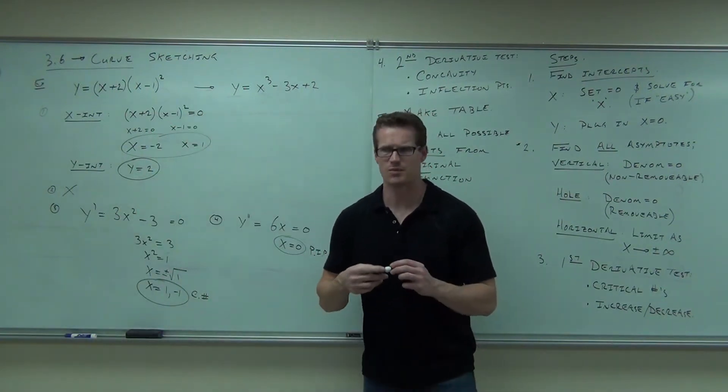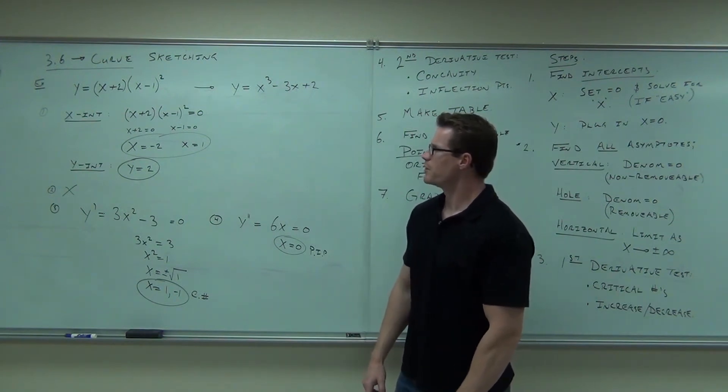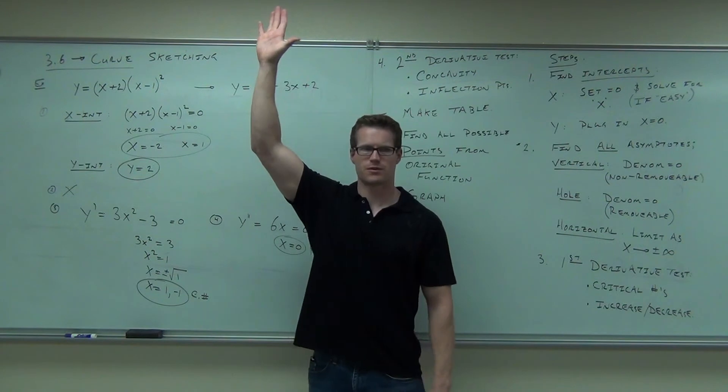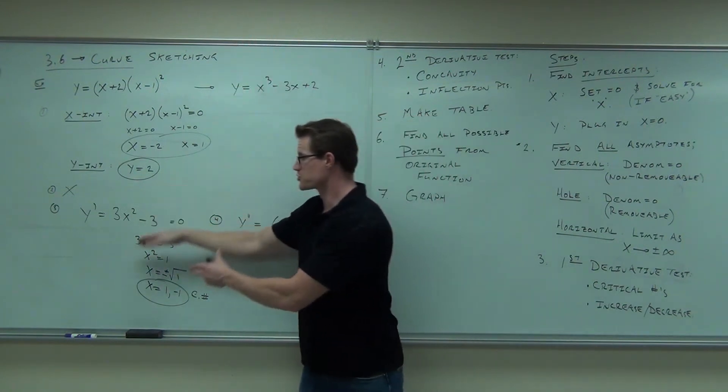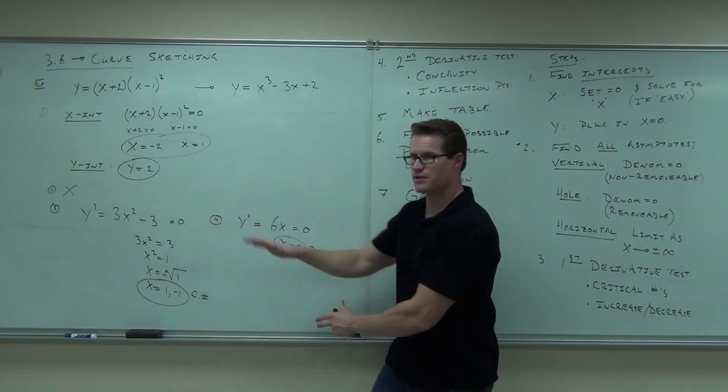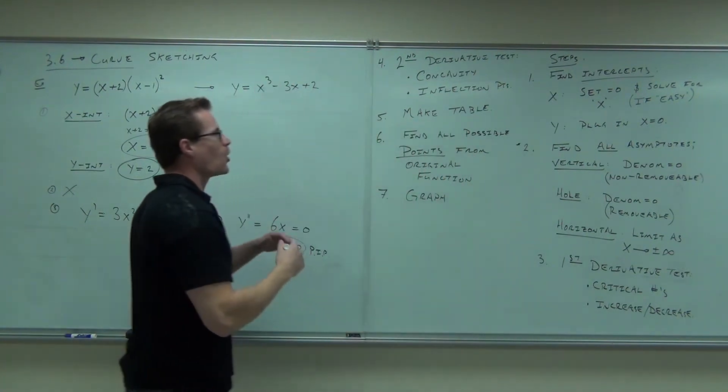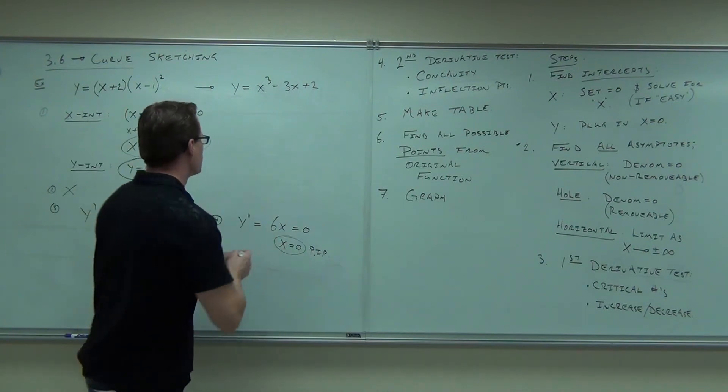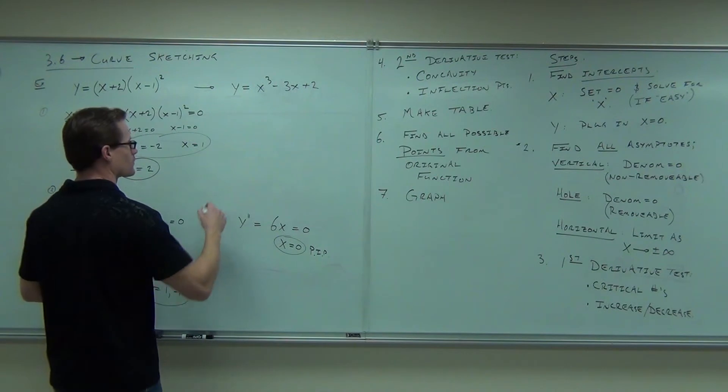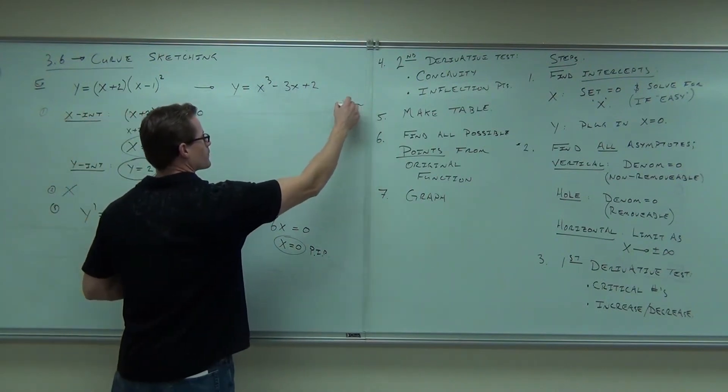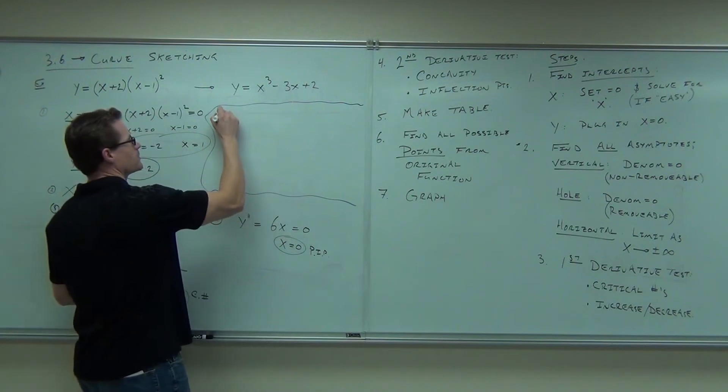Let's recap for just a second before I start making the table for you, and then we'll do the table next time. How many people feel okay on finding the x and the y-intercept? Good. That's our basic algebra. Do you feel okay with our first derivative test and our second derivative test? Now, step number five, this is where all your work happens. All your work happens right here in step five.